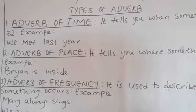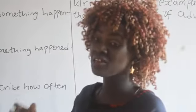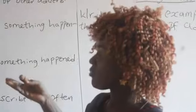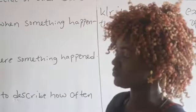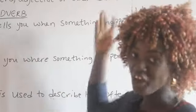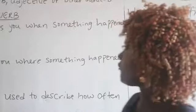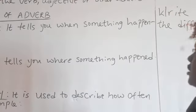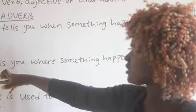We also have other adverb of place, like: Brian is in Lagos, Brian is in Abuja. Adverb of place tells you where something happened — for example, coronavirus started in China. Where did the thing happen? Where it really happened — that is for the adverb of place.